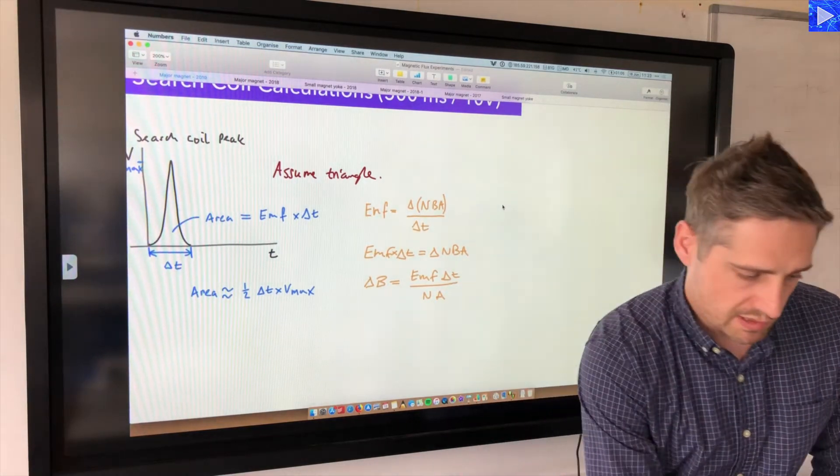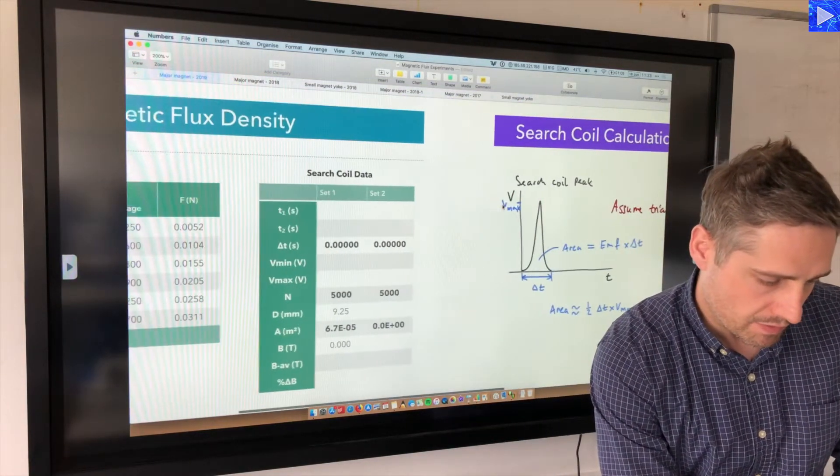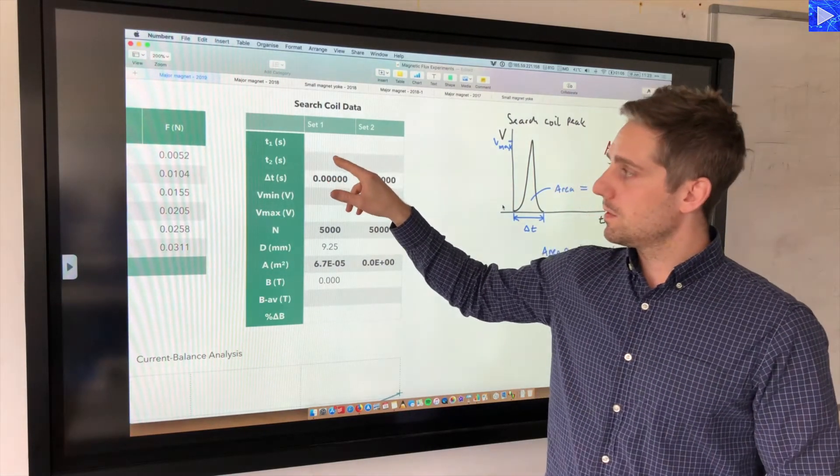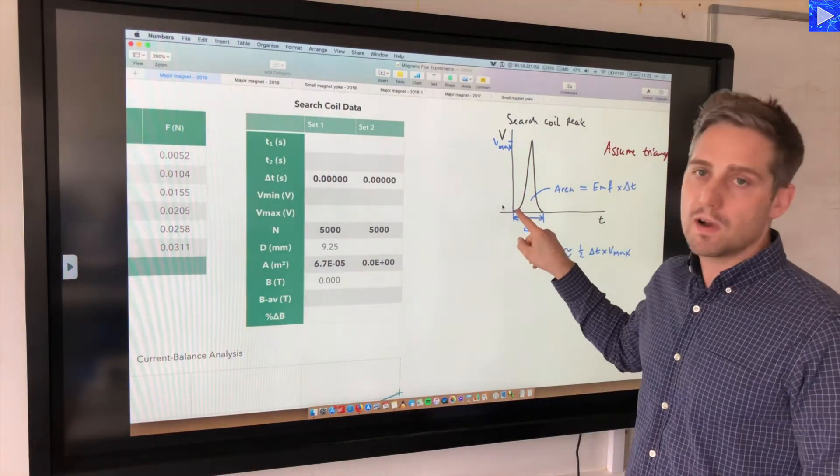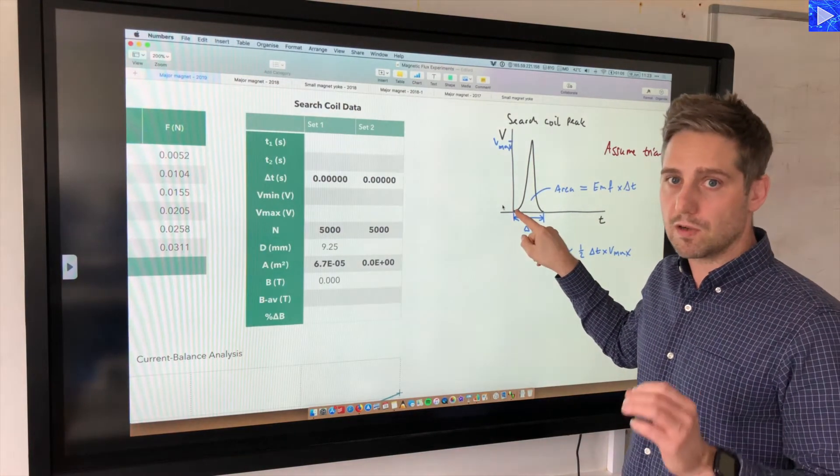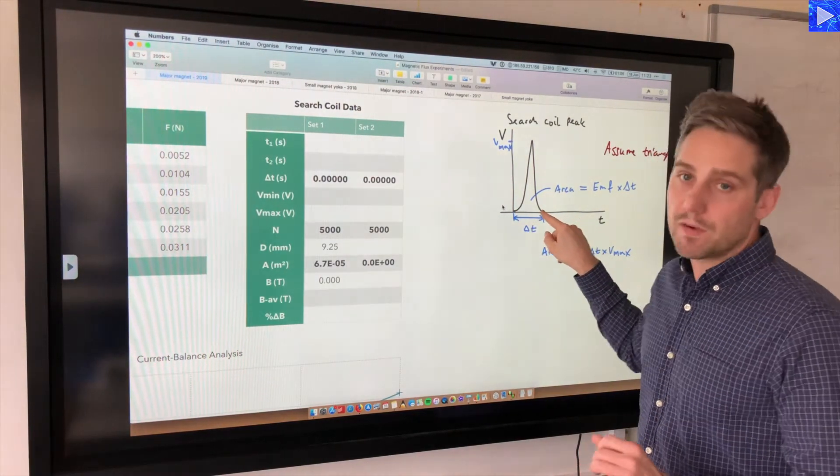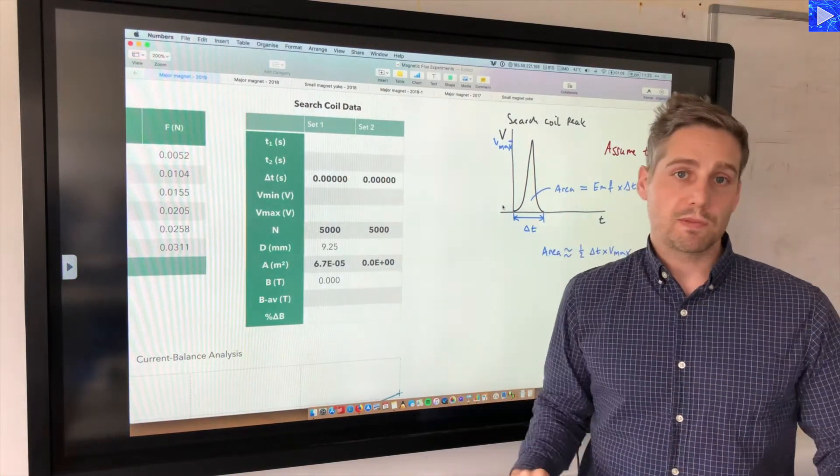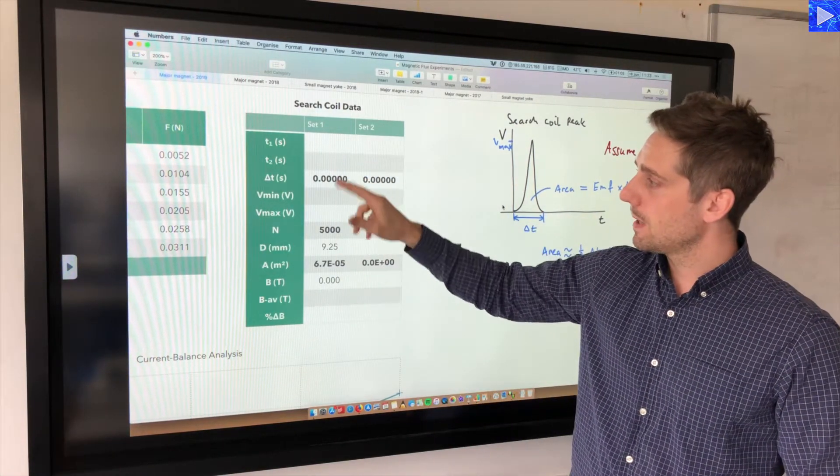I'll show you how that manifests itself over here. I'm going to be putting in two time values. I'm going to measure the time for the base of my peak and then the final time of the base of my peak—so that's T1 and T2 respectively. This will calculate delta T, giving me the base of the triangle.